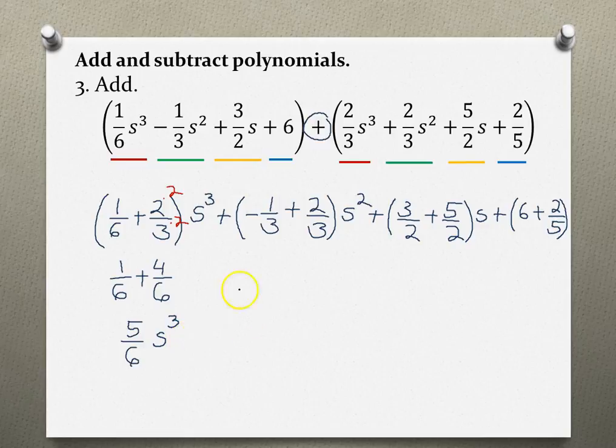Looking at the next term, we already have the same common denominator, so we can just add the numerators. -1+2=1. So plus 1/3, and we have our variable with power of 2.